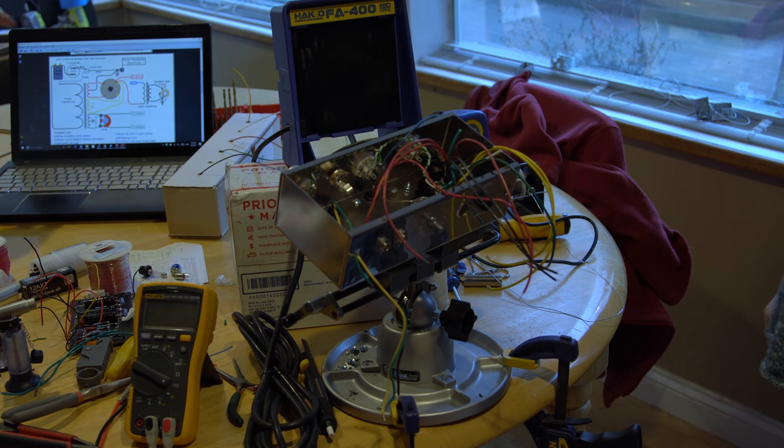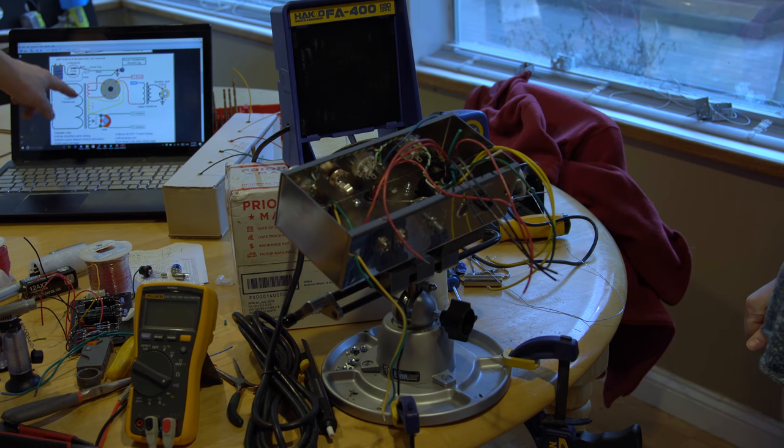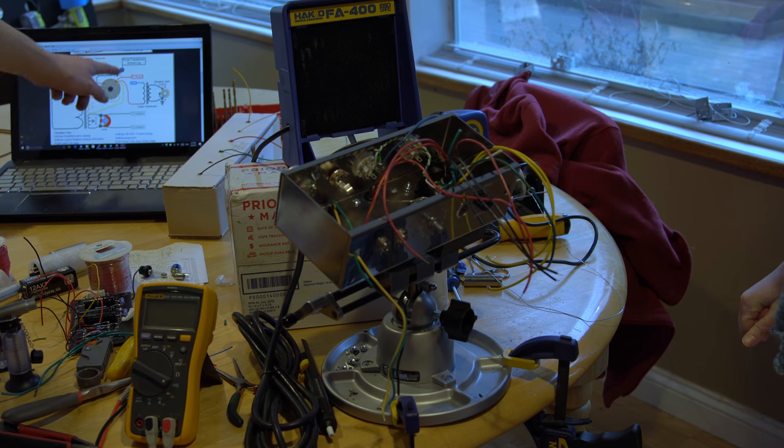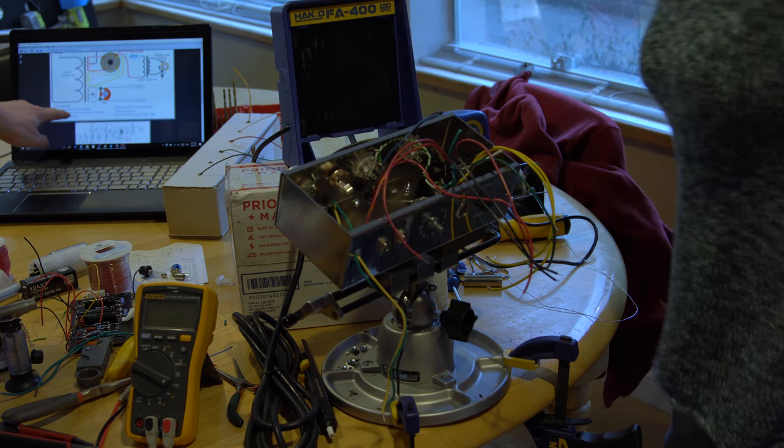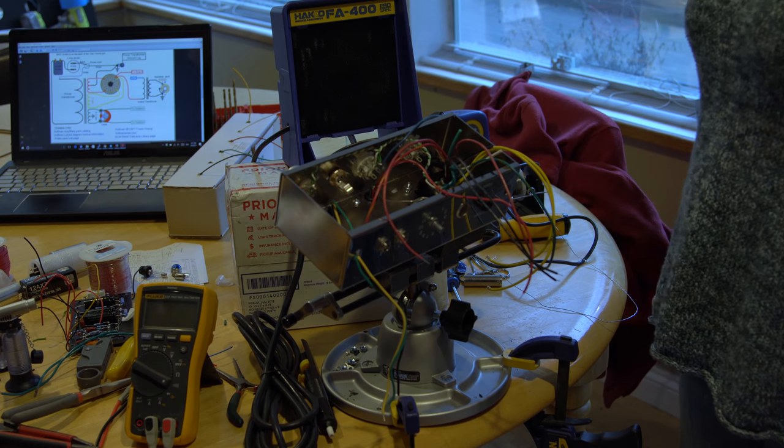In the background I've got the power transformer and the rectifier tube. We just did the heaters. We're going to hook up the 5 volt section but we're going to first do the main power section. So I will have her start with that.